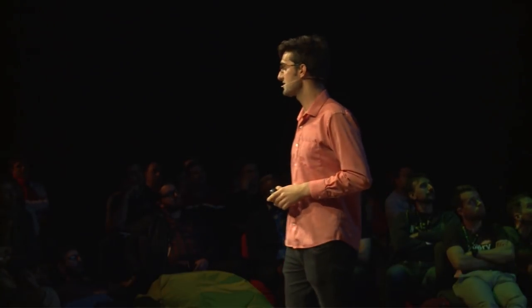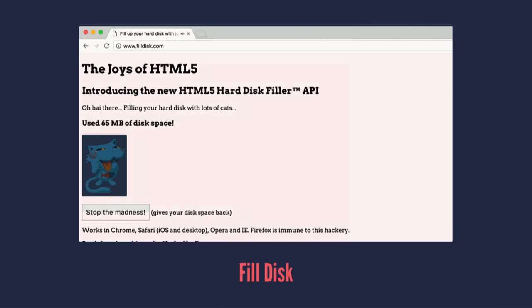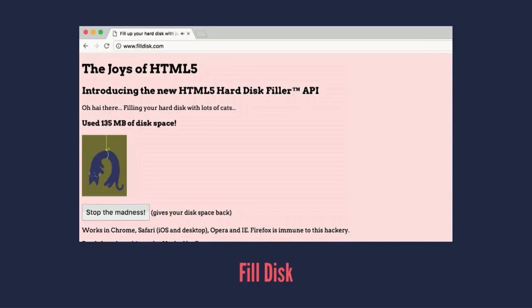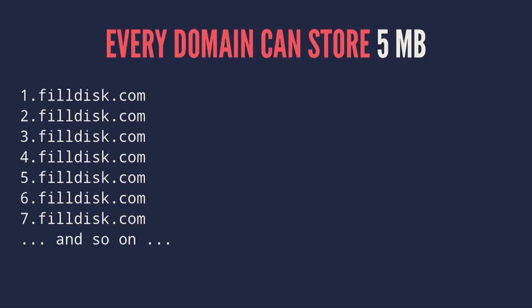Another one I did is called Filledisk — filledisk.com. If you go there, it would start to fill up your hard drive using the localStorage API, with cat pictures no less. It's quite simple how it works: the localStorage API gives every domain five megabytes to store files — ten megabytes in Firefox. But it turns out you can create an infinite number of subdomains, and each one gets five megabytes. So you can just trivially iterate through them and fill up their hard drive.